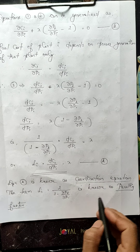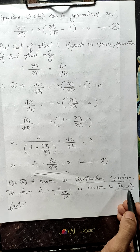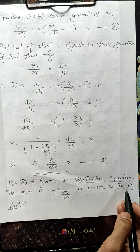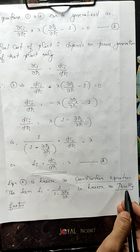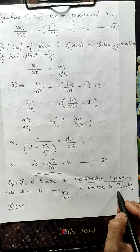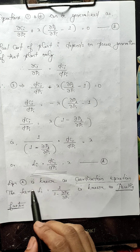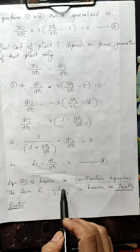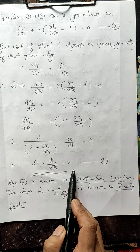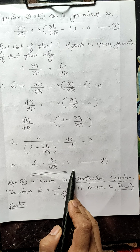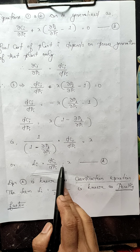The penalty factor is an important term frequently asked in exams. Penalty factor Li = 1/(1 - ∂PL/∂Pi). This is the important equation from this derivation — for the economic distribution of load between different plants in a power system network, the key equation is the coordination equation: Li · dCi/dPi = lambda.